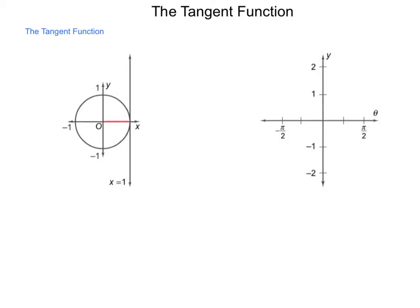Where would that line with angle theta intersect our tangent line of x equals 1? Whatever that location is, is the value of the tangent of that theta value.